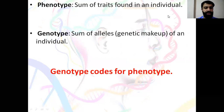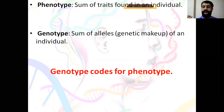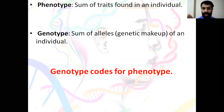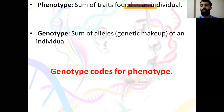Phenotype is the trait that we observe. For example, brown eyes, black hair, or blood group AB — all of that is called a phenotype. While the genotype is the sum of alleles. For example, blood group AB has allele A and allele B — this is the case of co-dominance where both alleles are expressed together. So the genotype AB codes for the phenotype blood group AB.